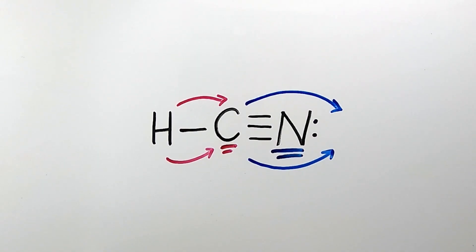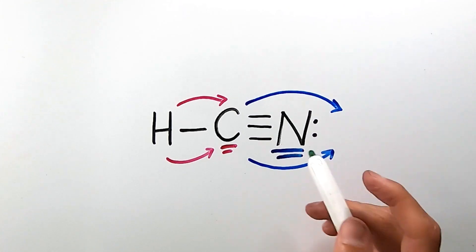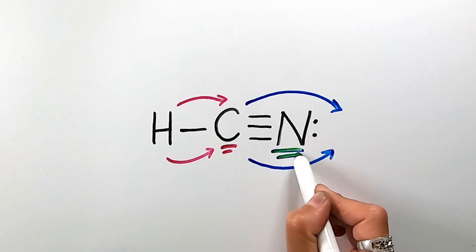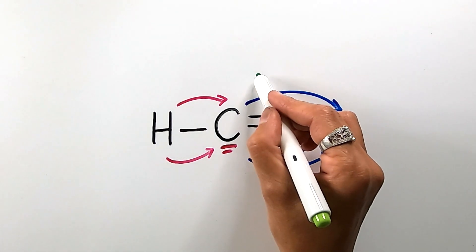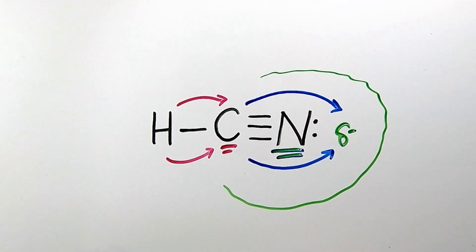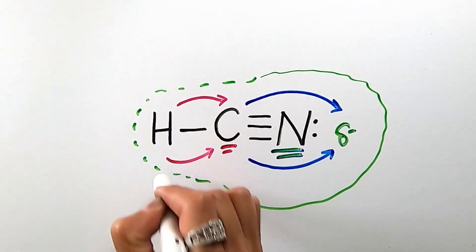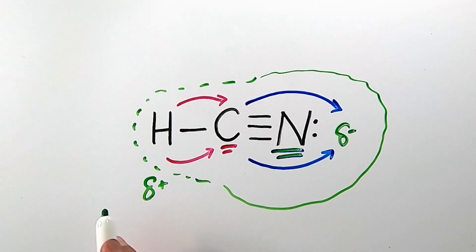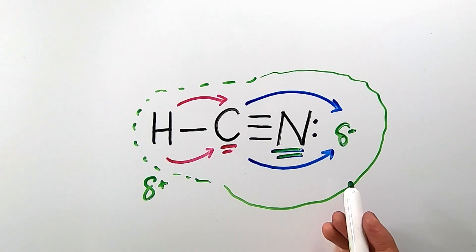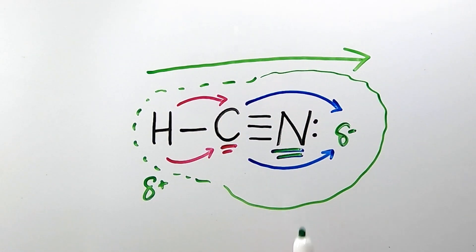So now let's talk about polarity in this molecule. Notice there's an overall net movement of electron cloud density toward the right, toward the more electronegative atom, which is nitrogen. Nitrogen, having most of the electron cloud density around it, will obtain a partially negative charge. On the other end of the molecule, where there is less electron cloud density, there will be a partially positive charge. Because one end is partially positive and the other end is partially negative, there's a net polarity pointing toward the nitrogen — the more electronegative atom. This molecule is polar.